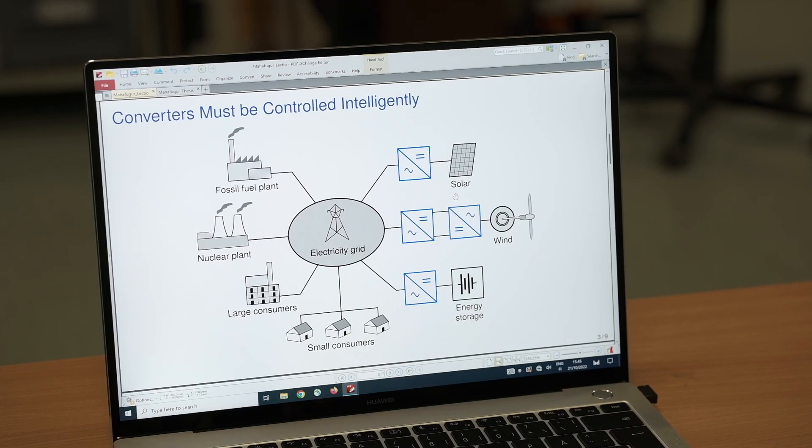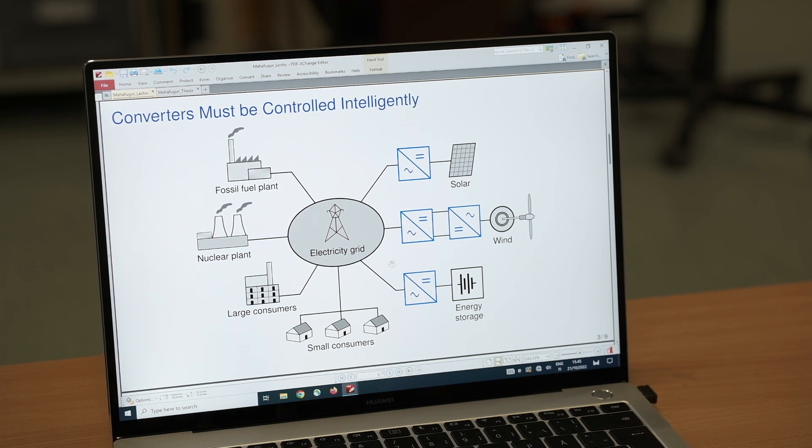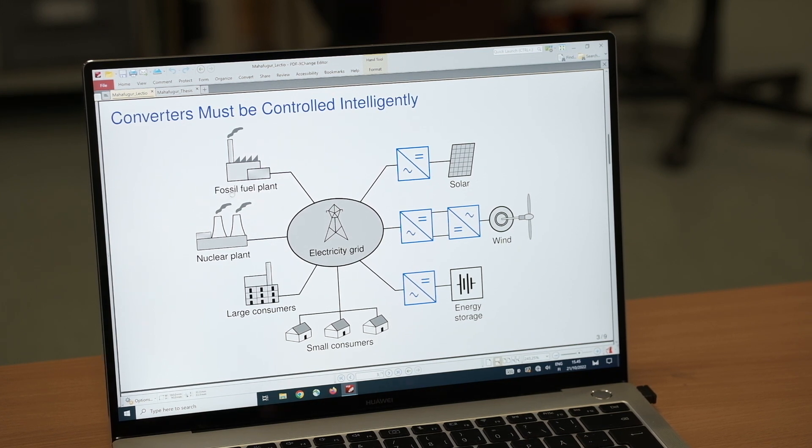Those renewable energy sources are integrated into the electricity grid with the help of power electronic converters. But the problem is these converters interact with each other and the entire electricity network, and for that reason, the management of the electricity grid becomes challenging.